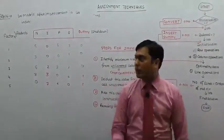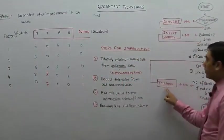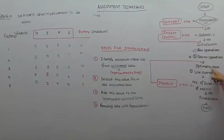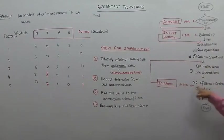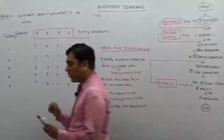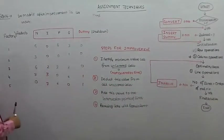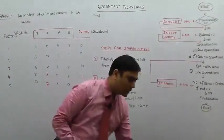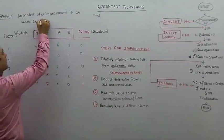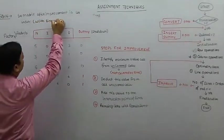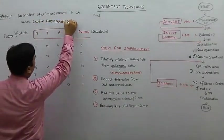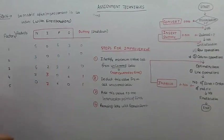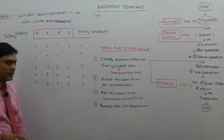Yeh improvement ke baad ka matrix hai. Ab humein kya karna hai — improve to kar diya, improve karne ke baad we have to go back and check: number of lines is equal to order of matrix? Matrix after improvement is as under — with line operations. Ab aap is matrix ko copy kar sakte hain aur line operations bhi laga denge.